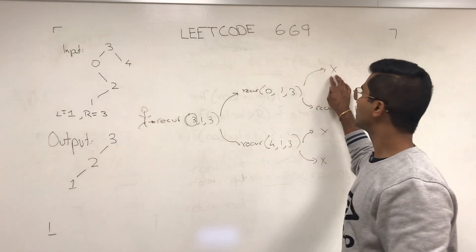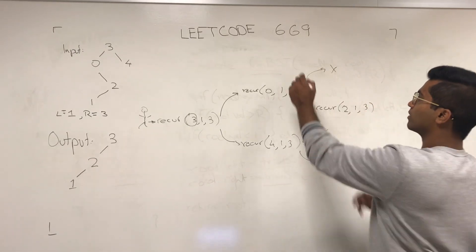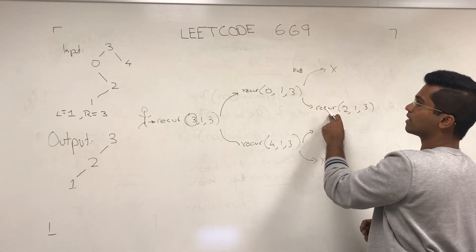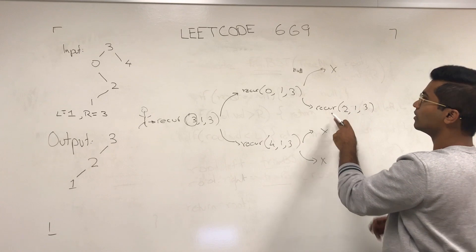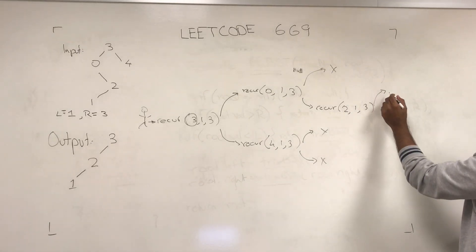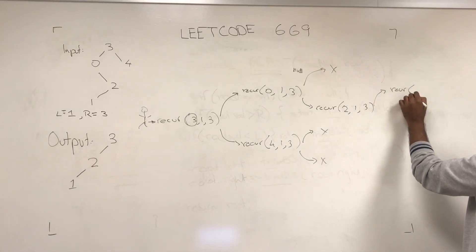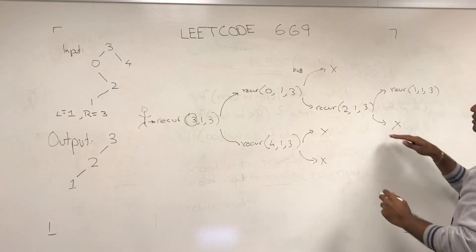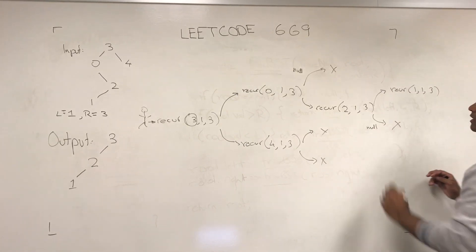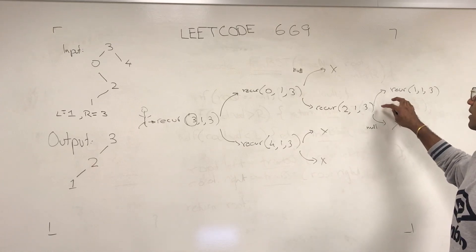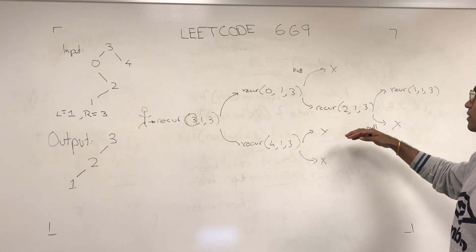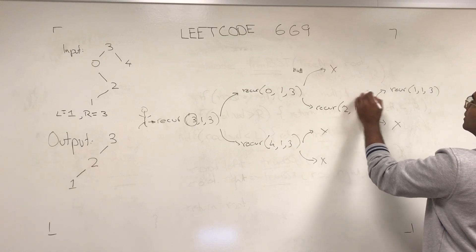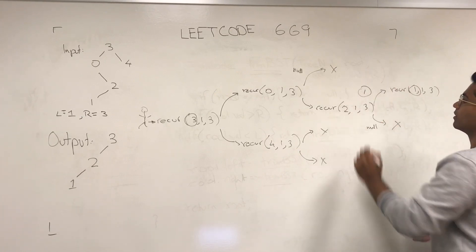This guy is going to return null, this guy is going to return, oh, he has a left and right, he has a left, yeah, recur 1, 1, 3 is going to be null, so this guy is going to return null, null. This guy is going to return himself, 1 is going to return 1.